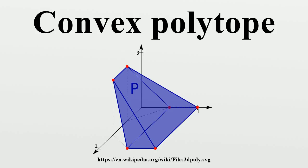Properties: Every convex polytope is the image of a simplex, as every point is a convex combination of the vertices. However, polytopes are not in general isomorphic to simplices.